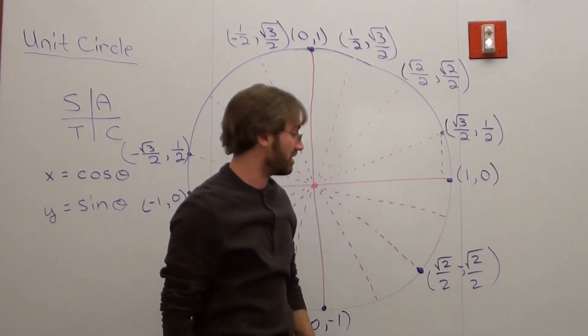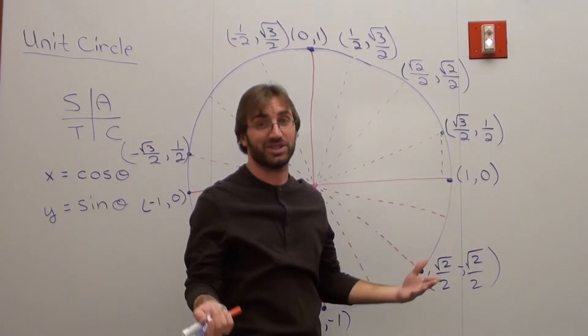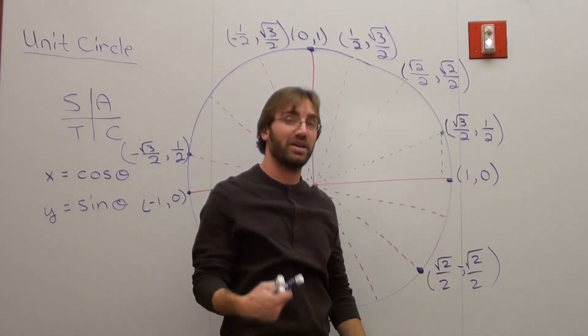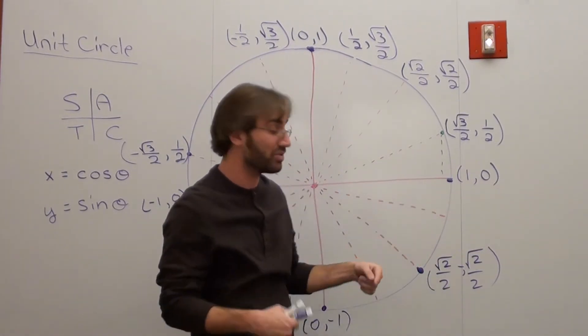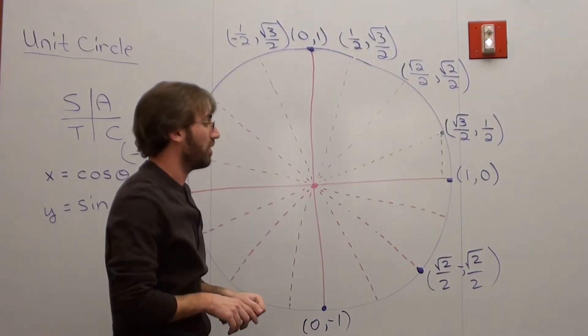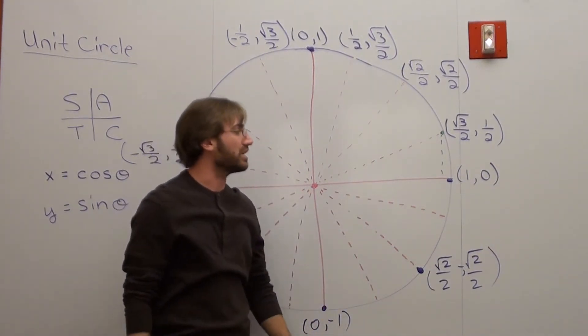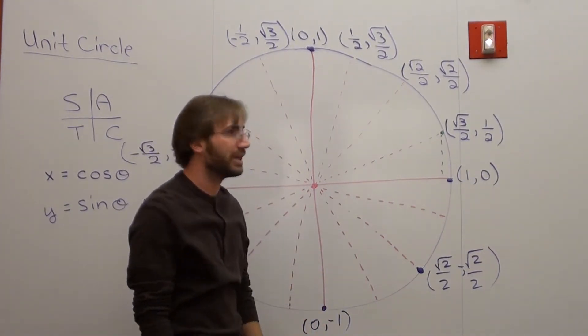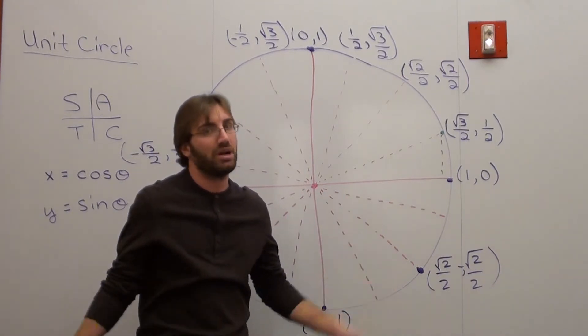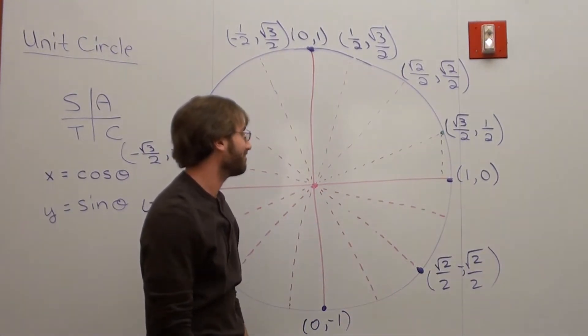If I want to find the tangent, I just take this one divided by this one, which is a negative divided by a positive, which is negative. And root 2 over 2 divided by negative root 2 over 2 divided by positive root 2 over 2 is negative 1. Really cool stuff. If you want to figure out your secant, your cosecant, and your cotangent, all you simply do is mix it around. That's pretty much all there is to it.